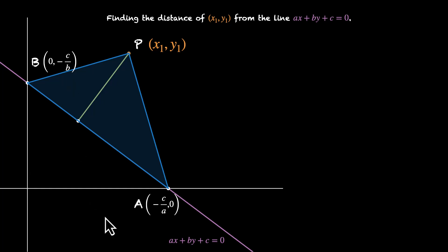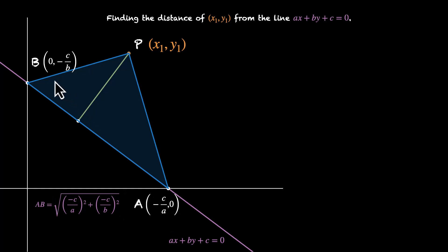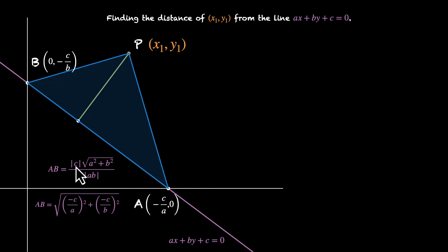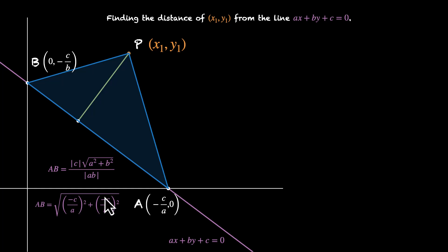We have the x-intercept and y-intercept, so we can figure out the length AB. AB equals the square root of (−c/a) squared plus (−c/b) squared. Simplifying: the numerator gives square root of c squared, which is mod(c). The denominator has square root of a squared times b squared, which is mod(a) times mod(b). So AB equals mod(c) times square root of (a squared plus b squared), all divided by mod(ab). Whenever we take a square root of a square, we use mod because square root gives the positive value.